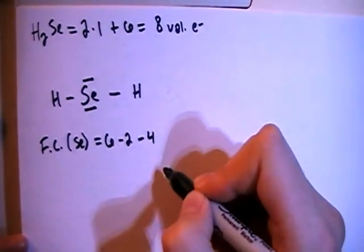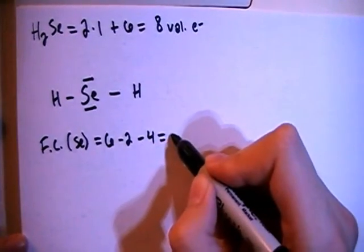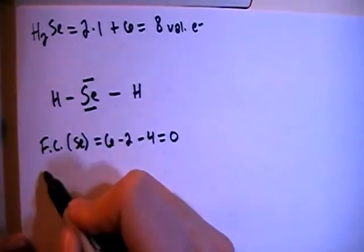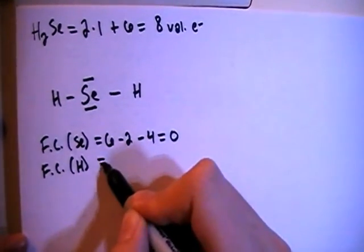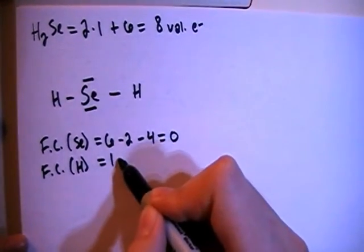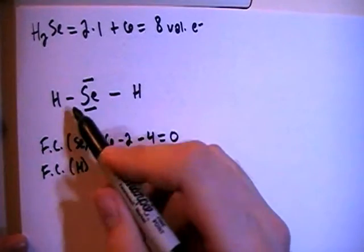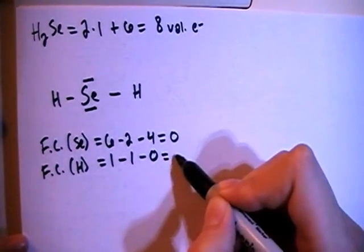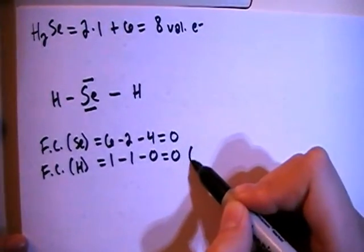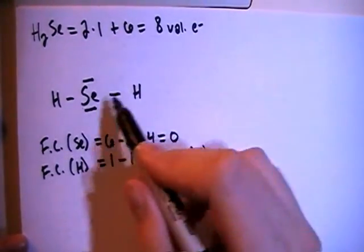four non-bonding electrons for a formal charge of zero. And then the formal charge on each of the hydrogens is going to be one valence electron brought in, minus a single bond for each hydrogen, minus zero non-bonding electrons for also a formal charge of zero. And we times that by two, because there are two of them.